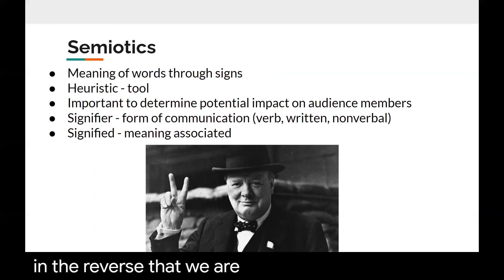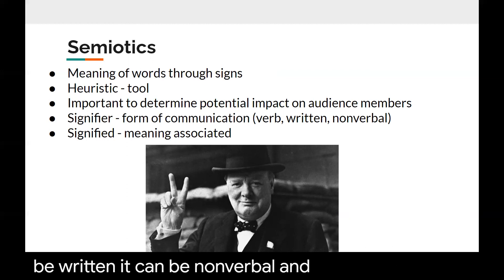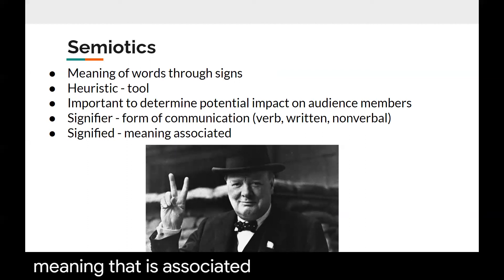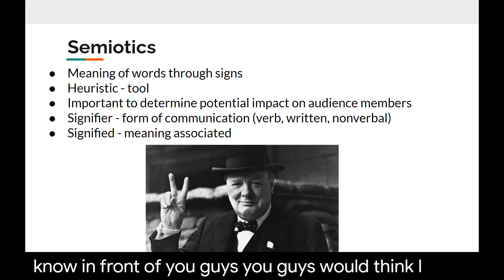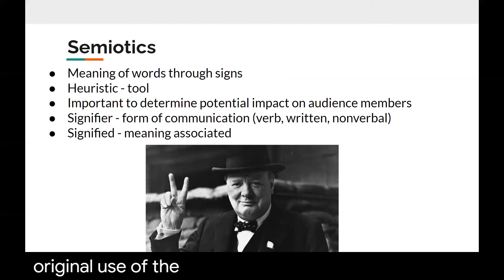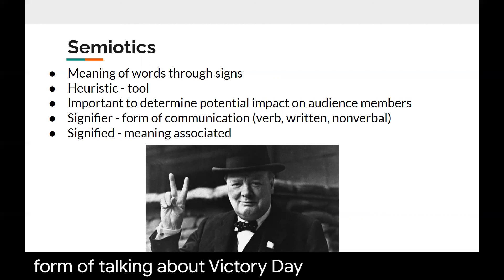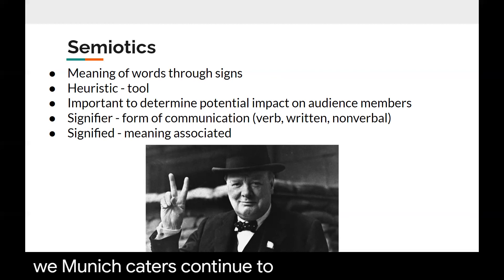We use semiotics to figure out what the symbols of our work mean to the general public — to ensure that we're not communicating something we don't mean to, and that we are using symbols that will best speak to what we mean. A signifier is the form of communication — verbal, written, or nonverbal — and the signified is the meaning associated with that signifier. For example, the V symbol made with the hands: today the signified meaning is peace, probably because of the 60s and 70s. But actually, the original use of the V with your fingers was a nonverbal form of talking about victory day. Signs and symbols can change over time, and it's important that we as communicators continue to understand how semiotics is working in today's society.